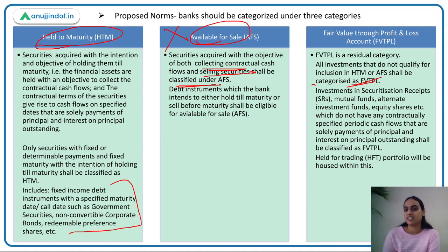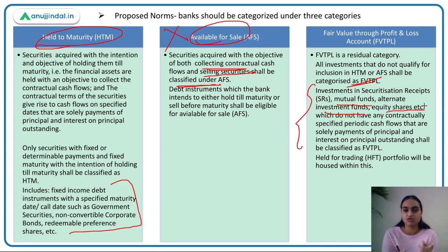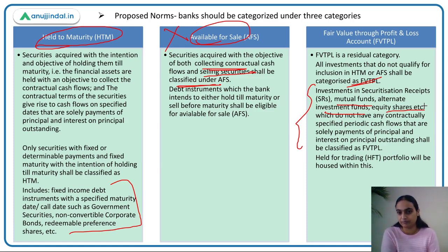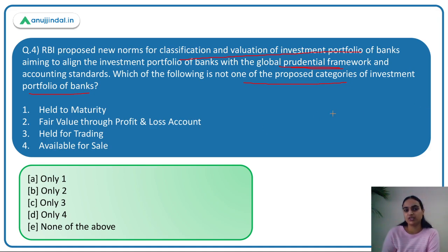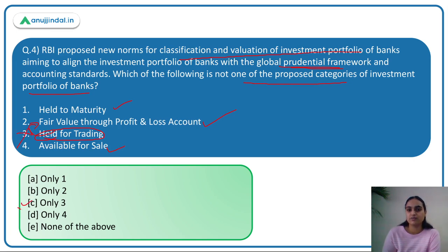Examples under FVTPL include securitization receipts, mutual funds, alternate investment funds, and equity shares where there are no contractual periodic cash flows — no fixed principal and interest contracts. Held for Trading has now been housed within this FVTPL category. So coming back to the question, the proposed categories are: Held to Maturity, Fair Value Through Profit and Loss Account, and Available for Sale. Held for Trading is now housed within FVTPL and is NOT a standalone proposed category. Answer is option C.